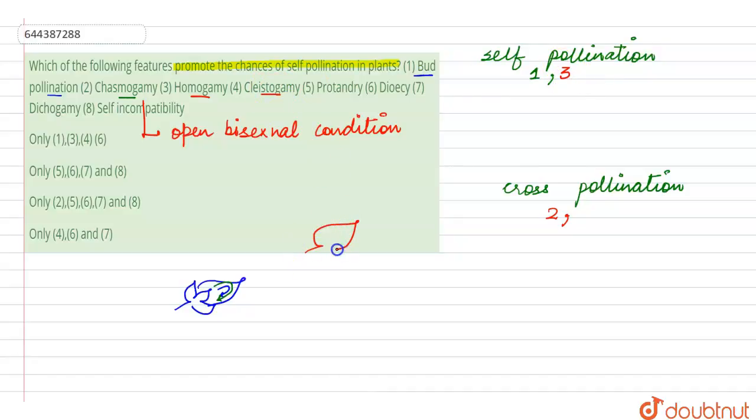Clistogamy means the flowers which never open at all. So these types of flowers which never open at all are going to be bisexual and going to transfer the anther to the stigma of the same flower, so the fourth can also be there.